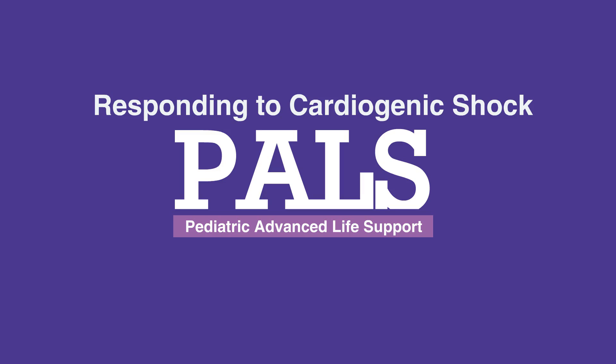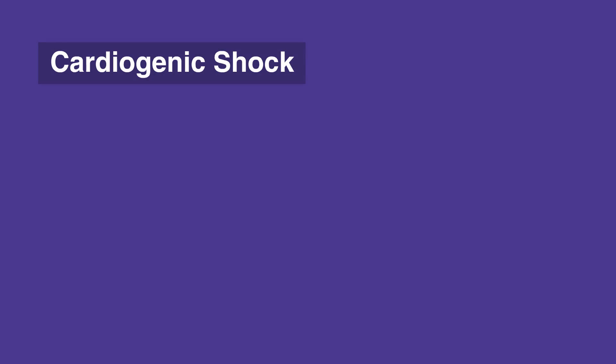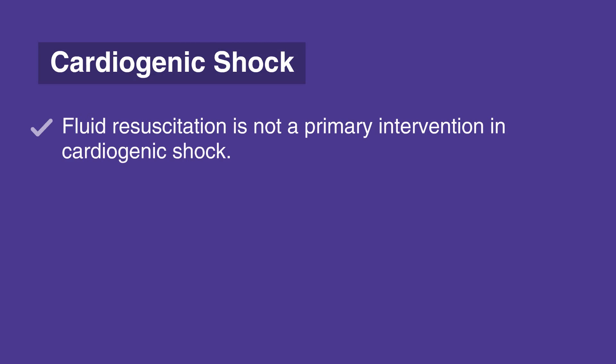Since children in cardiogenic shock have a problem with cardiac contractility, the primary goal of therapy is to restore contractility. Unlike most other types of shock, fluid resuscitation is not a primary intervention in cardiogenic shock.